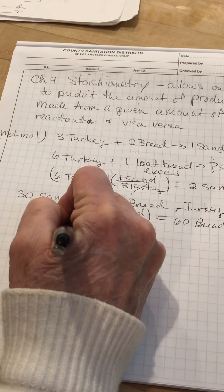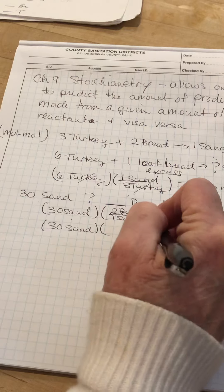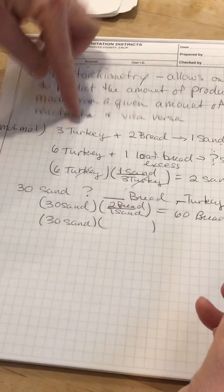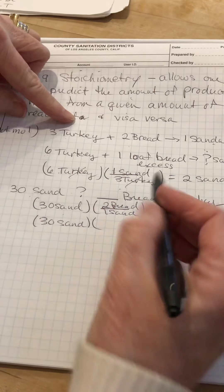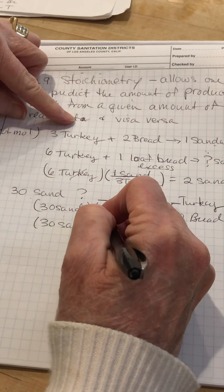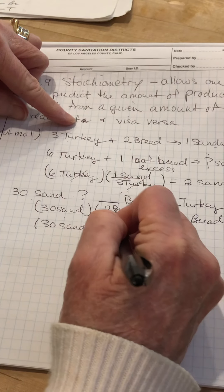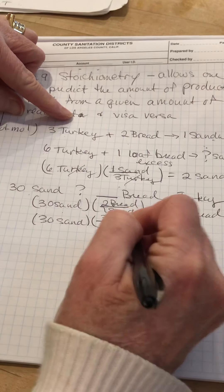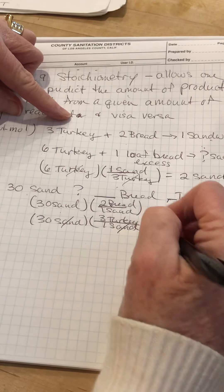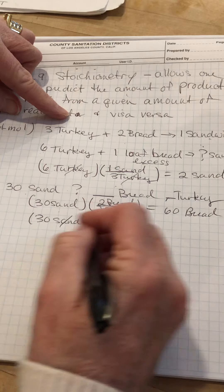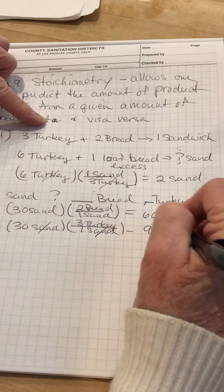Again, with 30 sandwiches, I want to look at how much turkey I need. So I'm going back to this beginning equation. And I see that three slices of turkey are required for every one sandwich. Units of sandwiches will cancel. We're left with units of turkey. 30 times 3 is 90 slices of turkey.